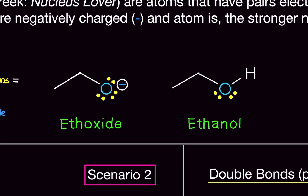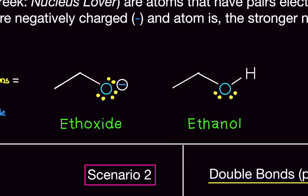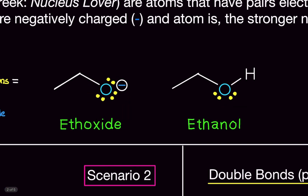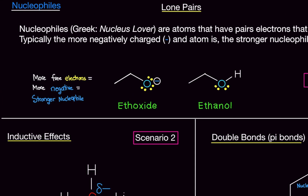Consider ethoxide and ethanol. Ethoxide has an oxygen with three lone pairs and is negatively charged. Ethanol's oxygen has two lone pairs but is not negatively charged. More free electrons means more negative charge, which means it's a stronger nucleophile.